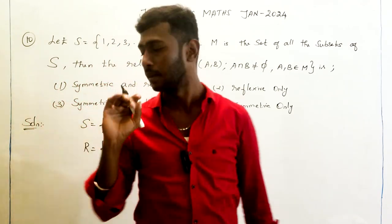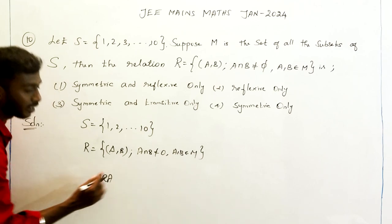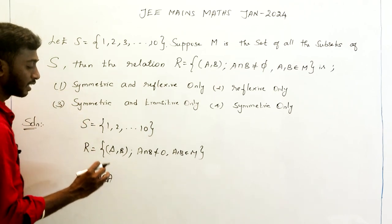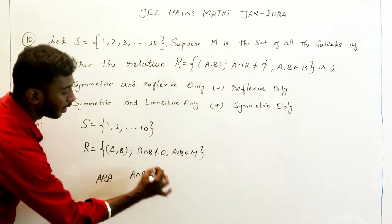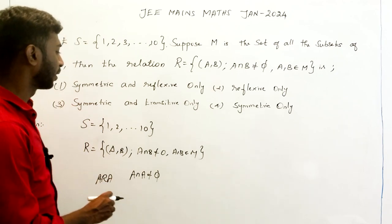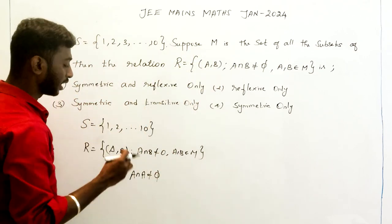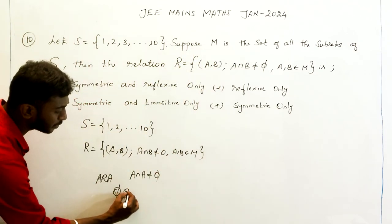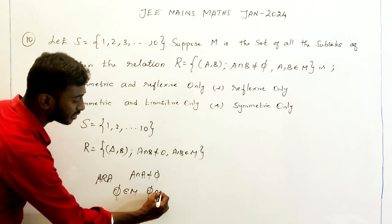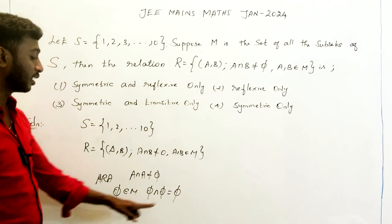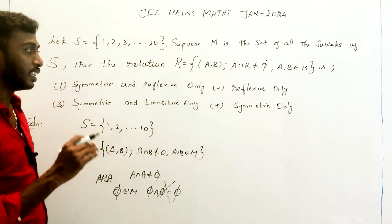First, we are going to check if R is reflexive. For reflexivity, we need A related to A, meaning A ∩ A ≠ ∅. But here, the empty set belongs to M — it is a subset of S. If A is the empty set, then A ∩ A = ∅, which is empty. So this condition is not satisfied for the empty set.